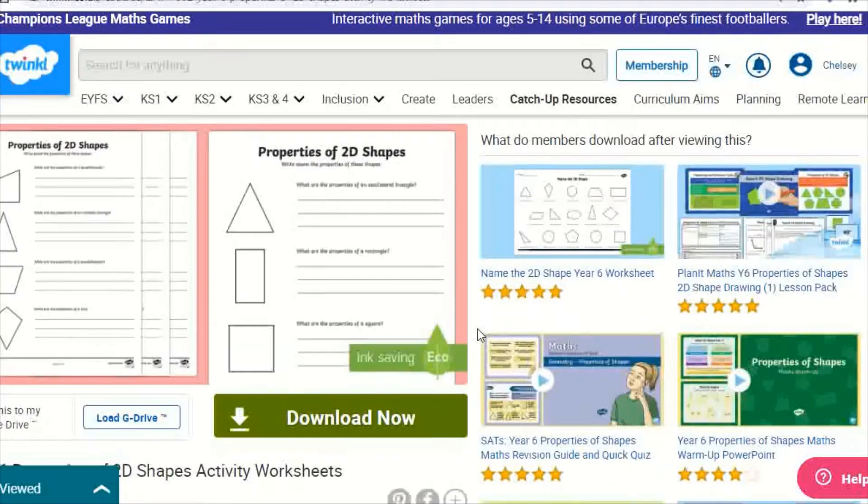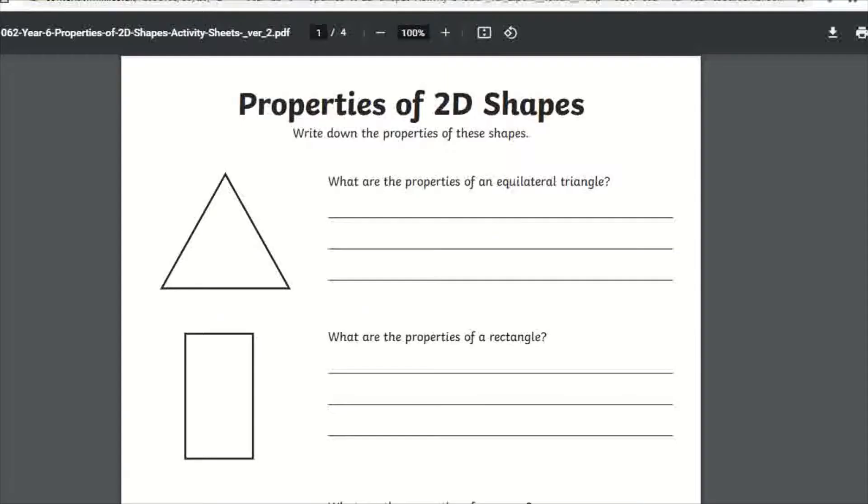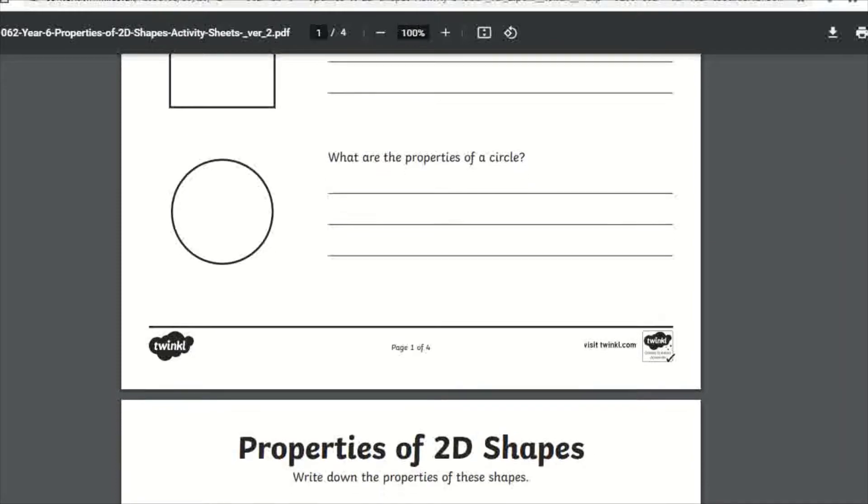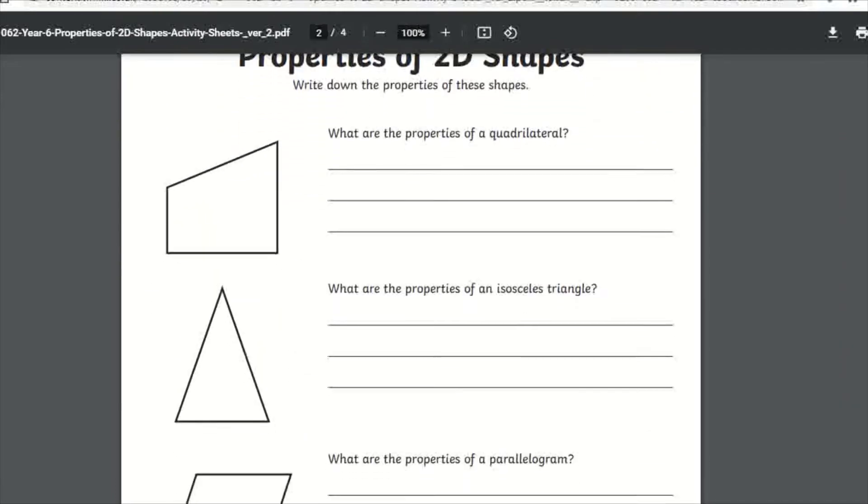The worksheet resource can be easily downloaded through the Twinkle website. There are four worksheets with a total of 16 shapes to be described. There is an example of each shape and line space for learners to record the shapes properties.